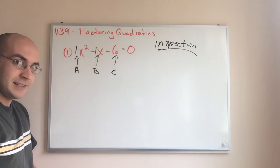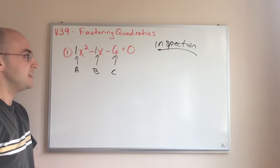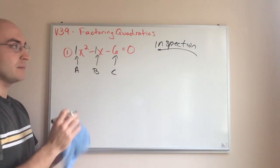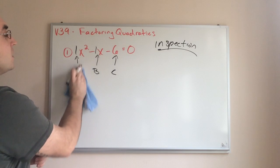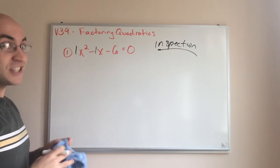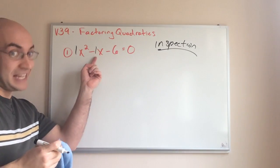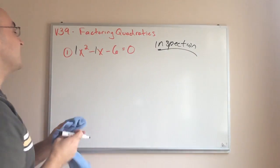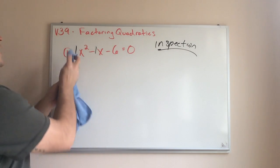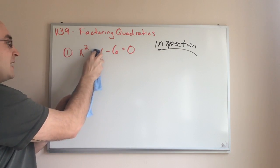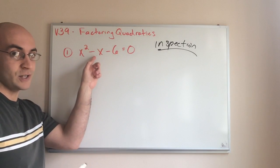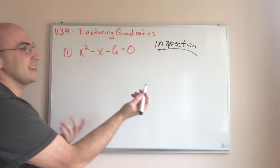So, what I'm trying to do with the inspection method is this. I want to take the c term and I want to find two factors of c that will add together or subtract to get b. I know. So, negative six or just let's just take six. I want to find factors of six, two factors of six that could add or subtract to make whatever this constant, whatever this coefficient is, which is negative one. So, let's take six.